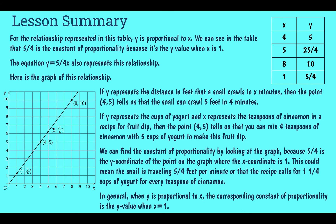And if I want to look at our graph, I'm looking for a coordinate that's 1 comma something. And in this case, it's 1 comma 5 fourths. So again, our constant of proportionality was 5 fourths.